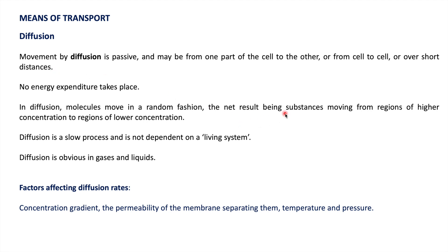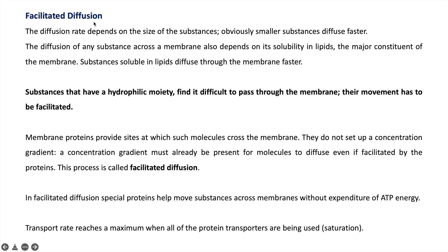Movement of substances in diffusion occurs from higher concentration to lower concentration. Diffusion is a slow process and is not dependent on a living system. The best medium for diffusion is gases and liquids. The factors affecting diffusion rates are concentration gradients, the permeability of the membrane separating them, and temperature and pressure.